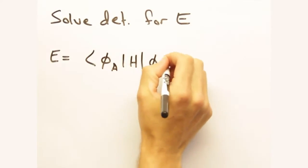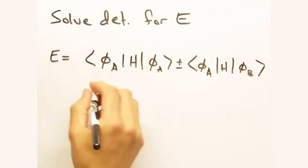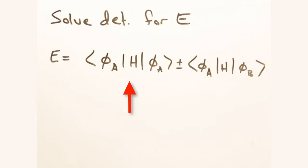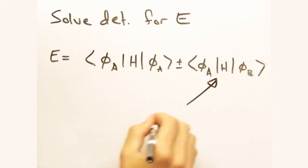After doing this, we end up with an expression for the energy of our system. For this case, we're going to pick the states phi_A and phi_B such that they are orthogonal, which makes this bottom term disappear. This leaves the energy as the sum of an on-site interaction plus or minus the exchange term.